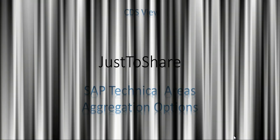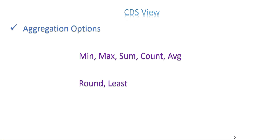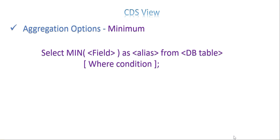Let's get into the slides. The topics we are going to cover today are min, max, sum, count, average, round, and least. For minimum, the syntax would be SELECT MIN - as an aggregation function - then the field name for which you want to get the minimum value, followed by FROM the table, and an optional WHERE condition.